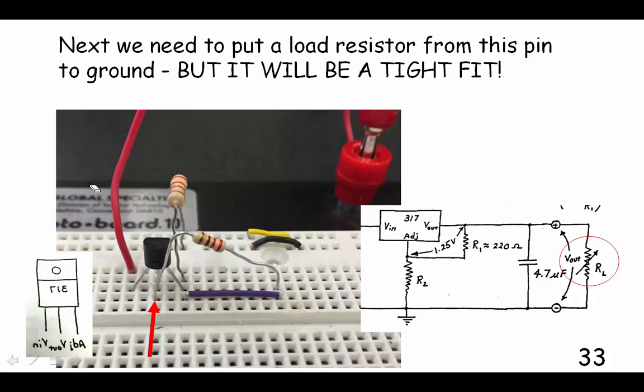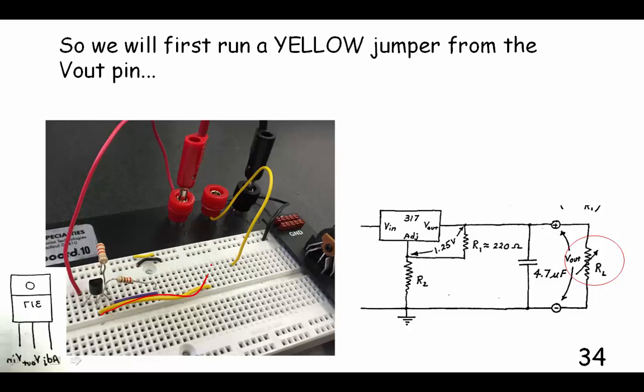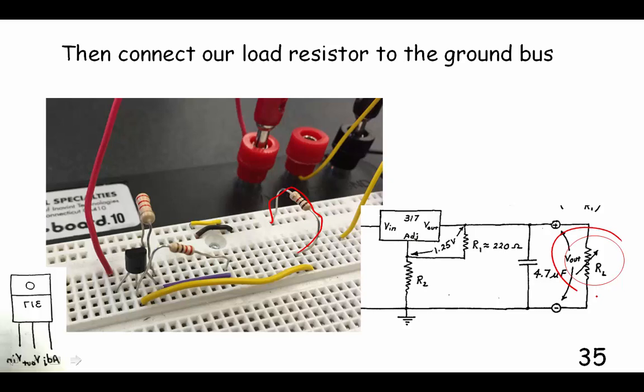Next we need to, so we've got this resistor in, and we've got this resistor in now. Now we have to connect our load resistor to this point, which is Vout. But how are we going to do that? It's tight in there. Well, let's run another jumper. We run a jumper right over here, and now we can take that load resistor and run it to our ground bus.